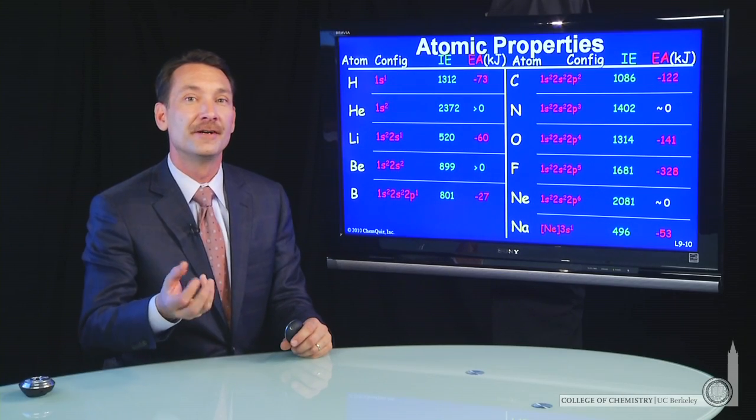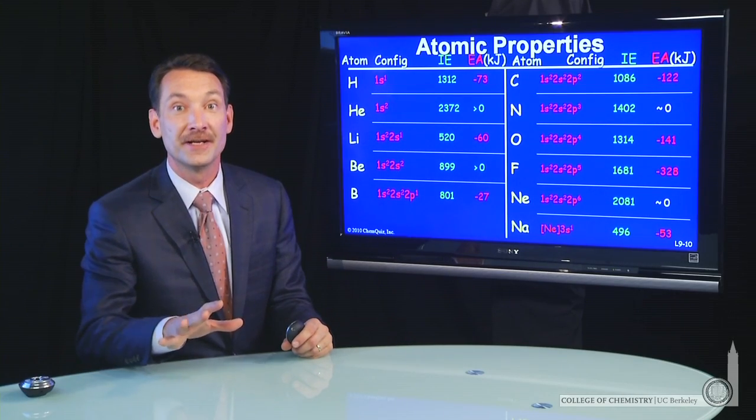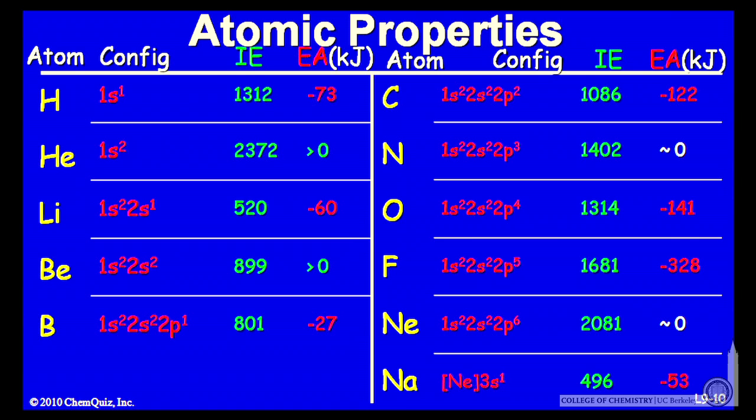Let's look at these properties of ionization energy and electron affinity in more detail. I have here a table summarizing electron affinities, ionization energies, and the electronic configurations of more elements on the periodic table.